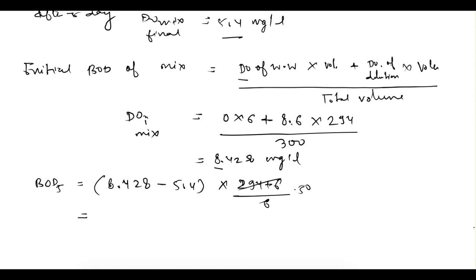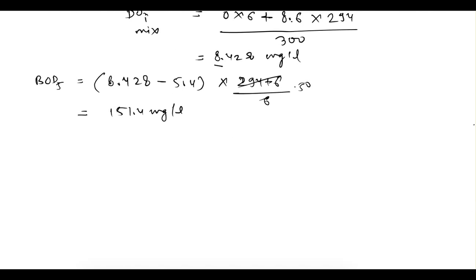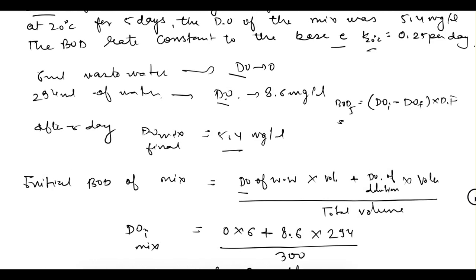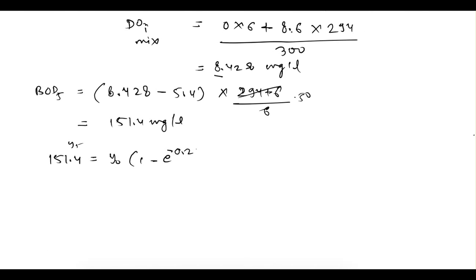Solving this, BOD5 equals 151.4 mg per liter. We can use this BOD5 to calculate the ultimate BOD using: Y5 = Y0 × (1 − e^(−KT)). K is given as 0.25 per day and T is 5 days. From here, Y0 — the ultimate BOD — is equal to 212.19 mg per liter.